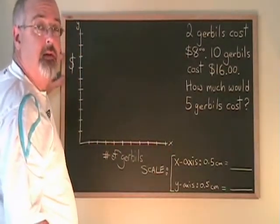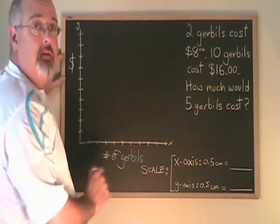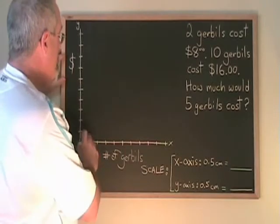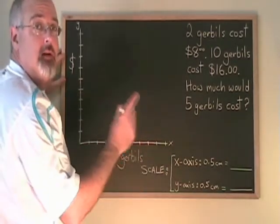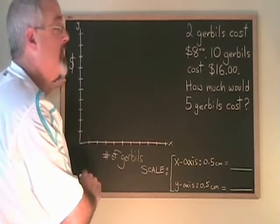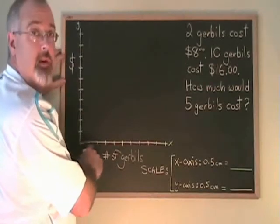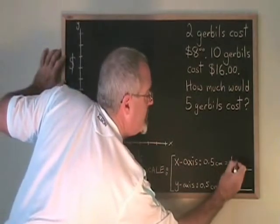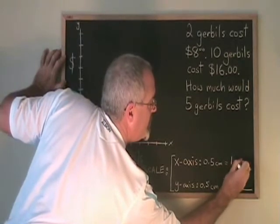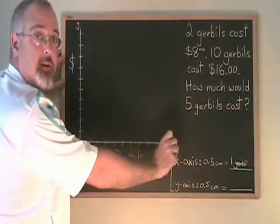I'm going to put the cost on this side, and I'm going to put the number of gerbils down here. On my x-axis, the number of gerbils have to be represented. I look at the numbers that I have. I have 2 gerbils, 10 gerbils, 5 gerbils. And I look for the largest of those numbers.